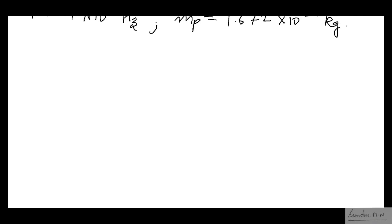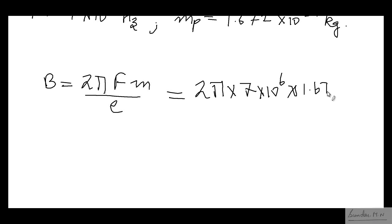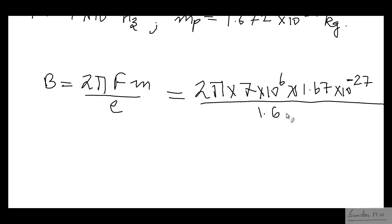As already seen in the previous problem, the formula is very simple: B = 2π × f × m / q. Plugging in the values: B = 2π × (7 × 10⁶) × (1.672 × 10⁻²⁷) / (1.6 × 10⁻¹⁹). Solving this gives B ≈ 0.46 tesla.